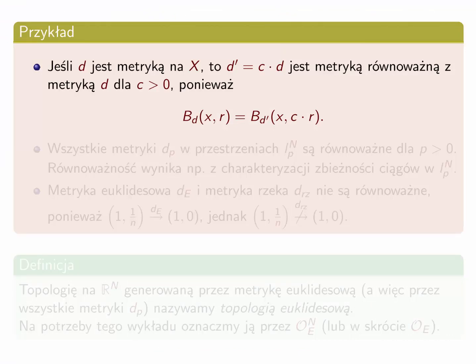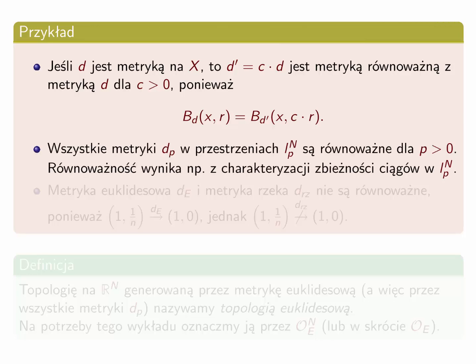Kilka prostych przykładów. Jeśli d jest metryką na zbiorze x i rozważymy metrykę d'', która będzie równa c razy d, gdzie c jest pewną stałą większą od zera, to te dwie metryki są równoważne, ponieważ zachodzi równość kul. Kula względem metryki d o promieniu r jest równa kuli o tym samym środku względem metryki d'' o promieniu c razy r. Łatwo pokazać, że ta równość implikuje ostatni z warunków równoważnych. Wszystkie metryki dp w przestrzeniach lpn są równoważne, co oznacza, że indukują tę samą topologię — jest to jedyna topologia na zbiorze Rn pochodząca od normy.